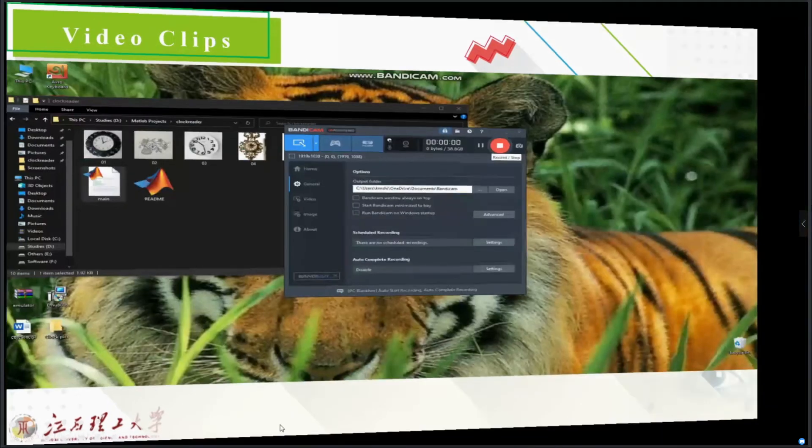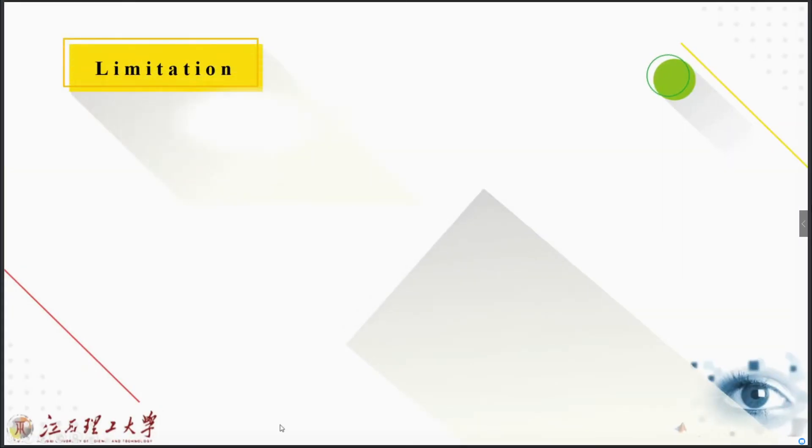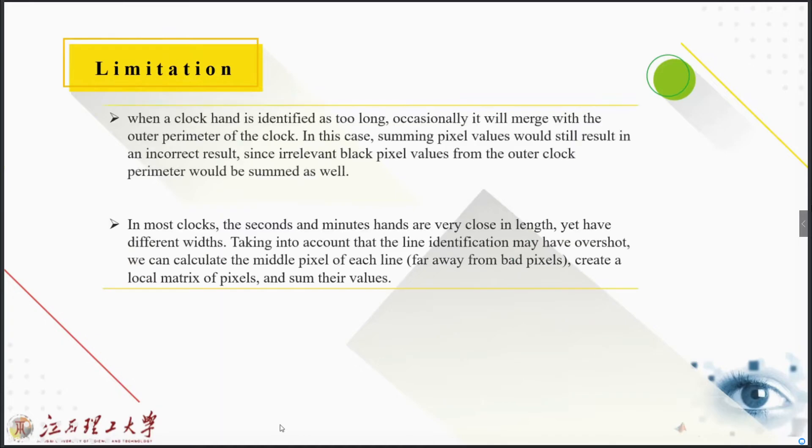Let's move to the next slide and talk about the limitations of my project. The limitations: when the clock hand is identified as too long, occasionally it will merge. That will alter parameters of the clock. In this case, summing pixel values would still result in an incorrect result since relevant black pixel values from the outer clock perimeter would also be summed. In most clocks, the second and minute hands are very close to the length yet have different widths. Taking into account that the line identification may have overshot, we can calculate the middle pixel of each line far away from the black pixels actually, create a local matrix of pixel and sum their values.